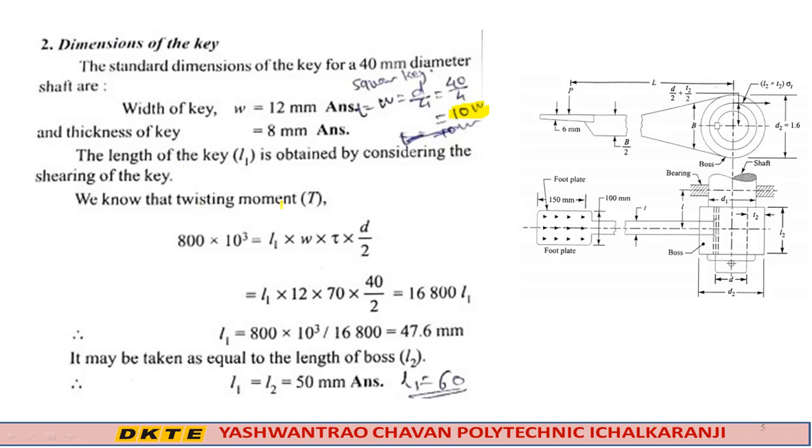The length of the key L₁ is obtained by considering the shearing of the key. We know that twisting moment T equals 800 × 10³ equals L₁ × W × τ × d/2. Simplifying this equation, L₁ equals 47.6 mm. It may be taken as equal to the length of the boss, L₁ equals 50 mm.